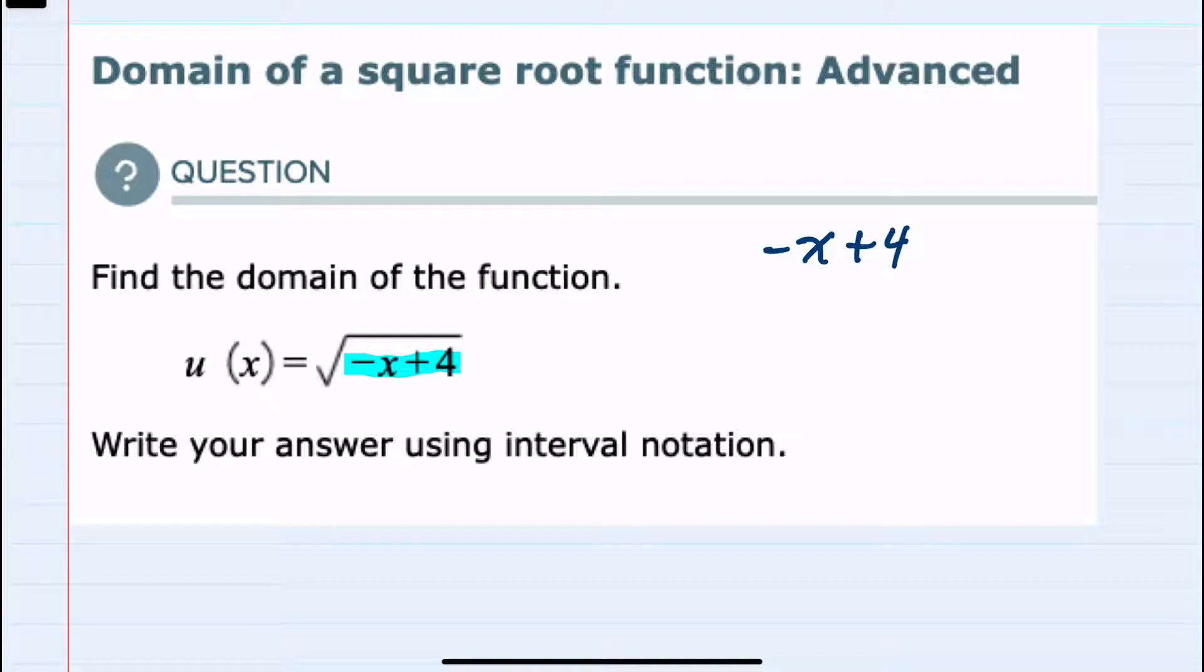So the value underneath the radical would have to be greater than or equal to zero. And now that we've written the possible values that we could take the square root of in this inequality,